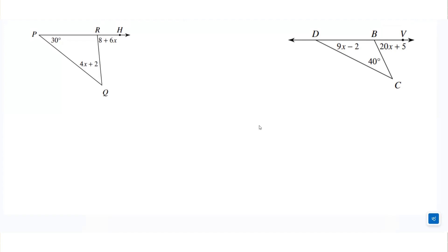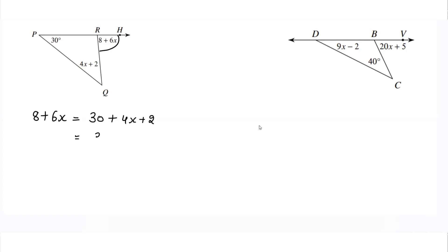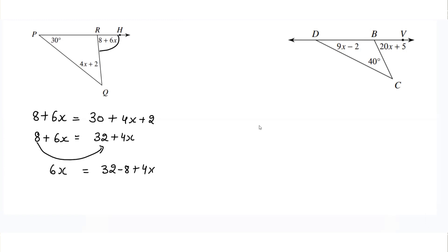Next, angles are given in terms of a linear equation, so we'll use the exterior angle rule to find x. The exterior angle is 8 + 6x, and it equals 30 + 4x + 2. Adding 30 and 2 gives 32 + 4x on the right side, and 8 + 6x on the left. Taking 8 to the right side: 6x = 32 − 8 + 4x.